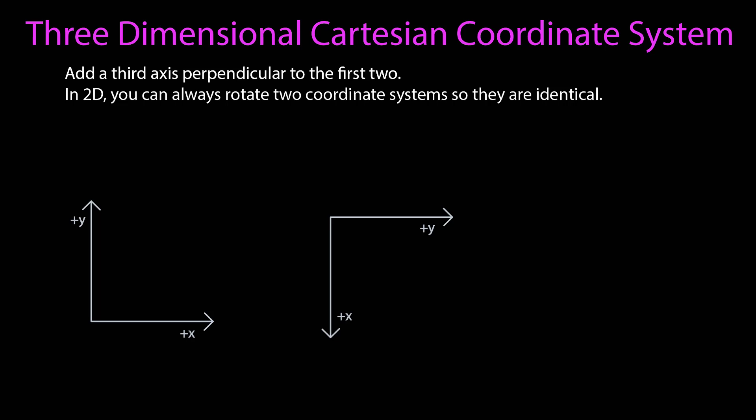In two dimensions, you can always rotate two coordinate systems so they are identical. Let's take a look at these two. If I were to take this coordinate system and rotate it counterclockwise 90 degrees so that this y-axis is pointing in the same direction, I can do that. And now the coordinate systems are identical.